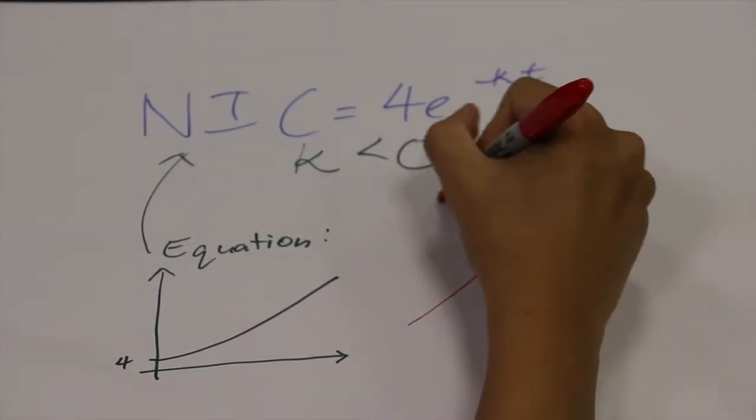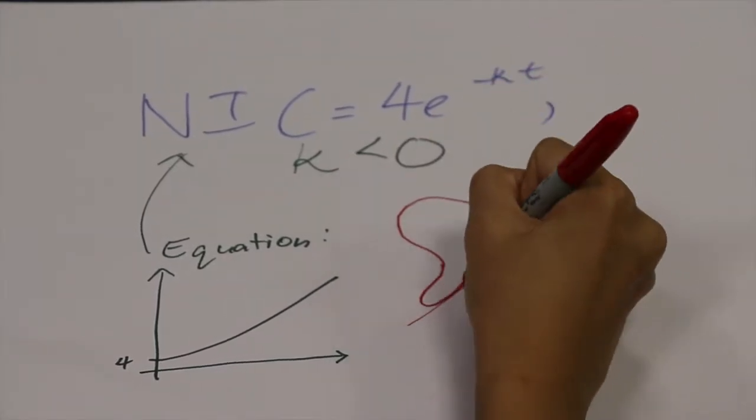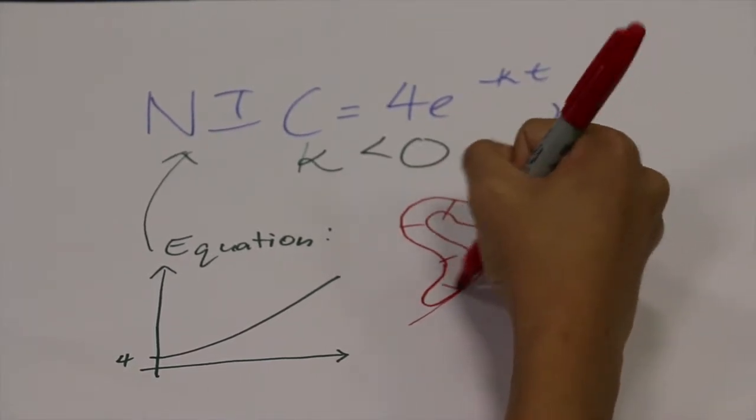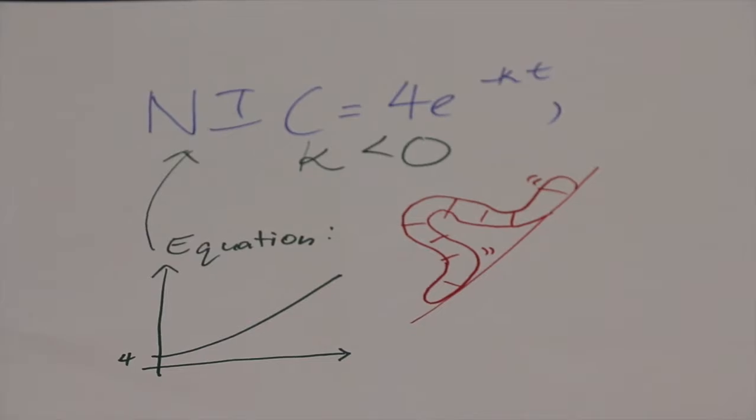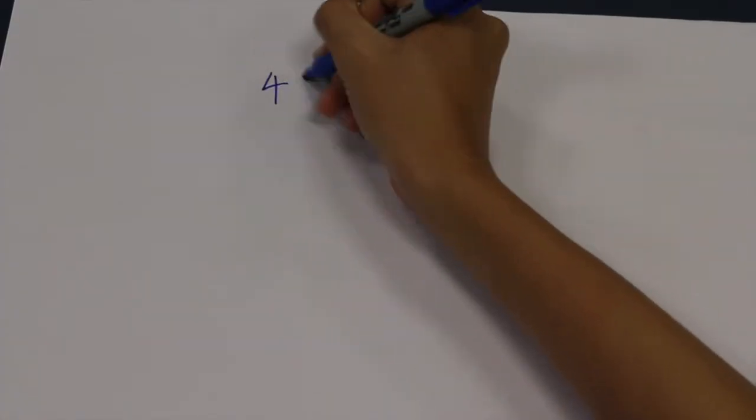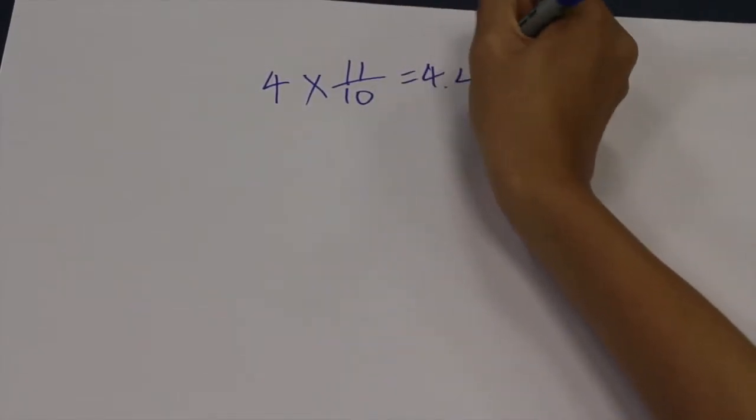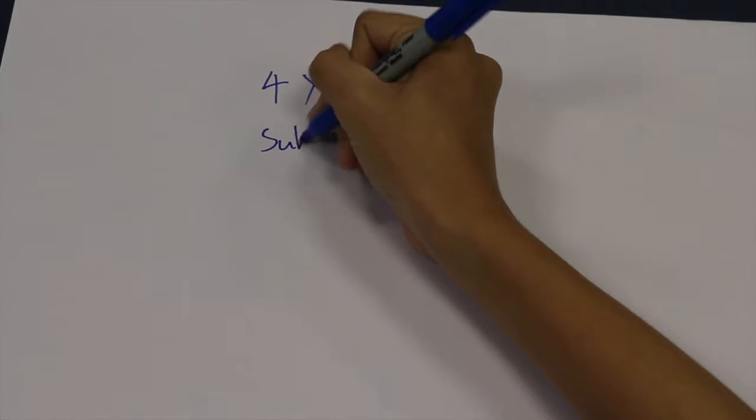Whereby NIC is the number of non-immune cutworms, k is the constant, and t is the number of days. In order to derive the equation, we decided to take the values on the first day. On the first day, the number of non-immune cutworms is 4.4 based on the 10% growth per day.